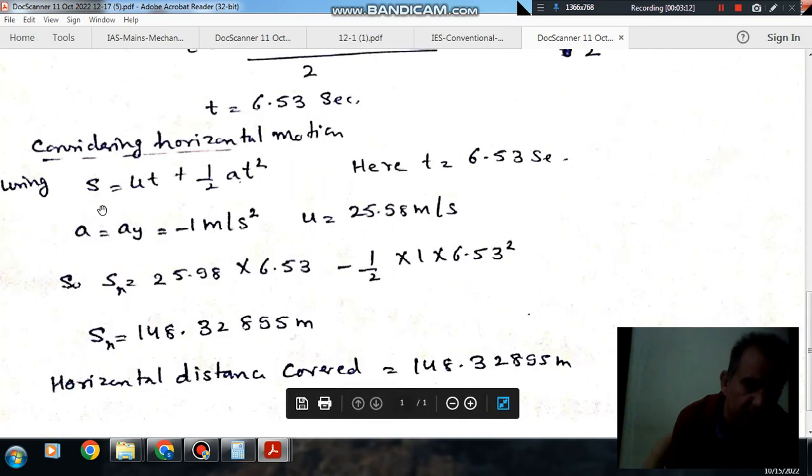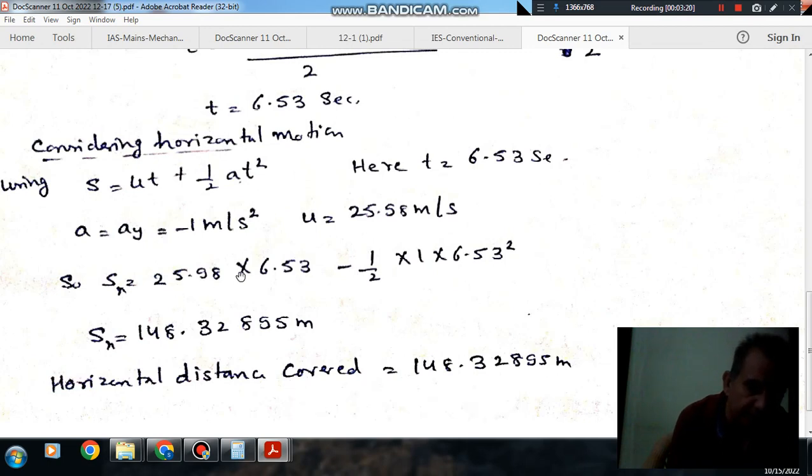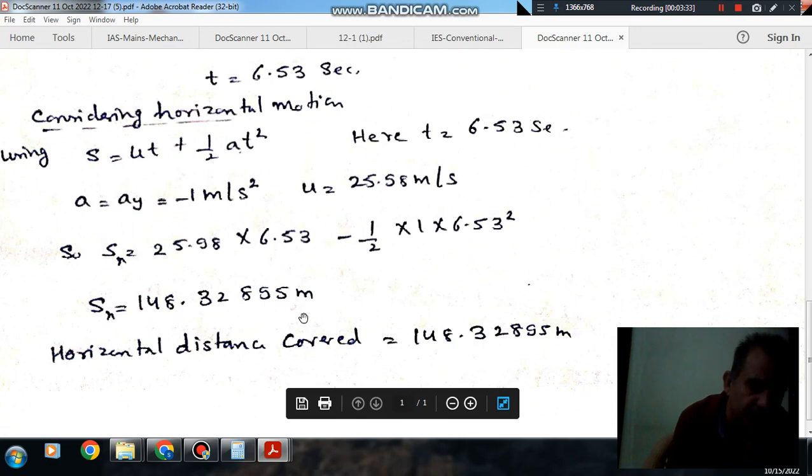Now, using again this formula, s equals u t plus half a t squared, here u is the initial velocity in x direction, that is 25.98 m/s, and t is 6.53 seconds, and acceleration is minus 1 m per second squared. So this will be the horizontal distance covered.